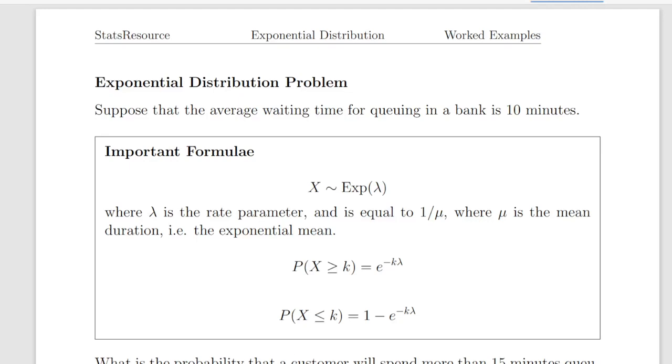In this presentation, we are going to look at the exponential distribution, and we're going to introduce the scenario we are in a bank. Suppose that the average waiting time for queuing in a bank is 10 minutes.